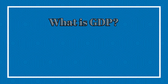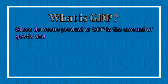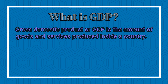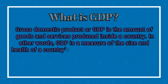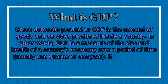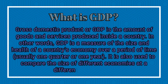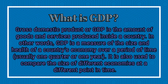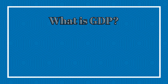What is GDP? Gross Domestic Product, or GDP, is the amount of goods and services produced inside the country. In other words, GDP is a measure of the size and health of a country's economy over a period of time, usually one quarter or one year. It is also used to compare the size of different economies at a different point in time.